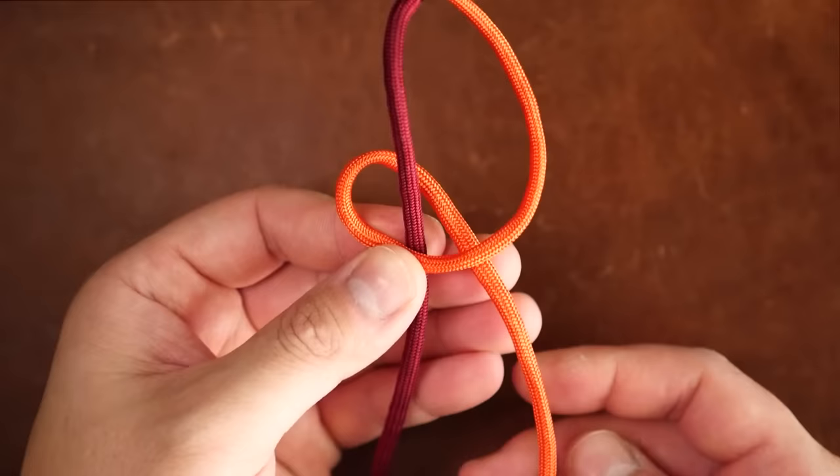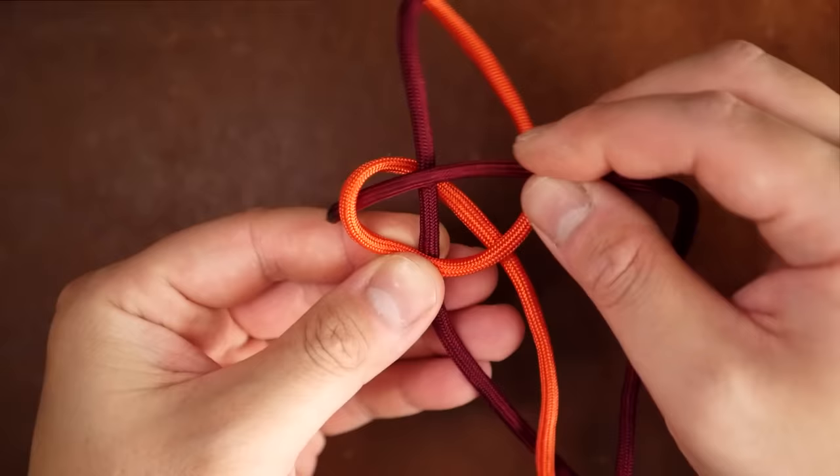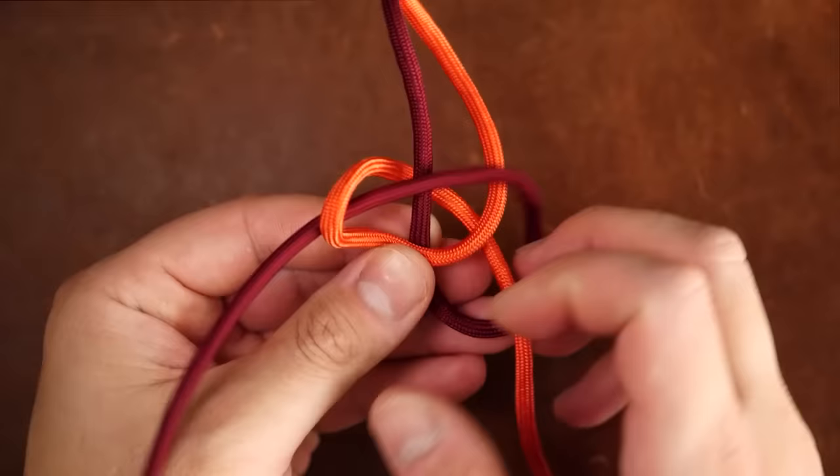From there, take the burgundy, go behind the orange strand, and come back in the front and pass it through the orange loop and to the left of the burgundy strand. Pull tight and we have our knot.